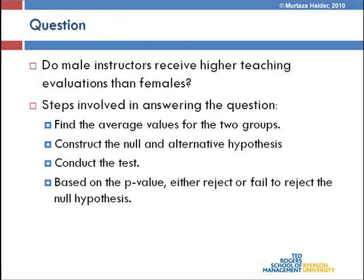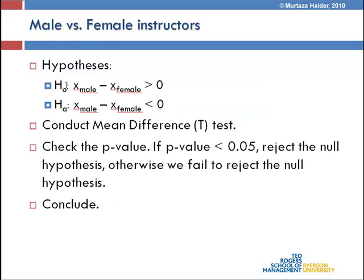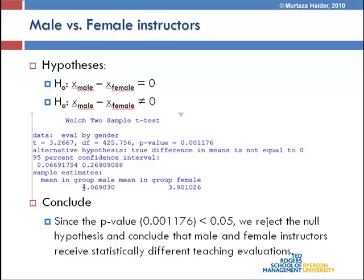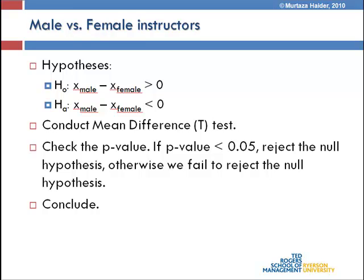In the previous test, we still do not know if males are statistically receiving higher teaching evaluations than females, because we only tested whether the average evaluations for male and female are different. We have not tested if males' teaching evaluation is higher than that of females. The steps will be the same except the null and alternative hypotheses will be different. We already know the male teaching evaluation was higher — 4.06 for males and 3.9 for females — so that helps us construct the hypothesis.